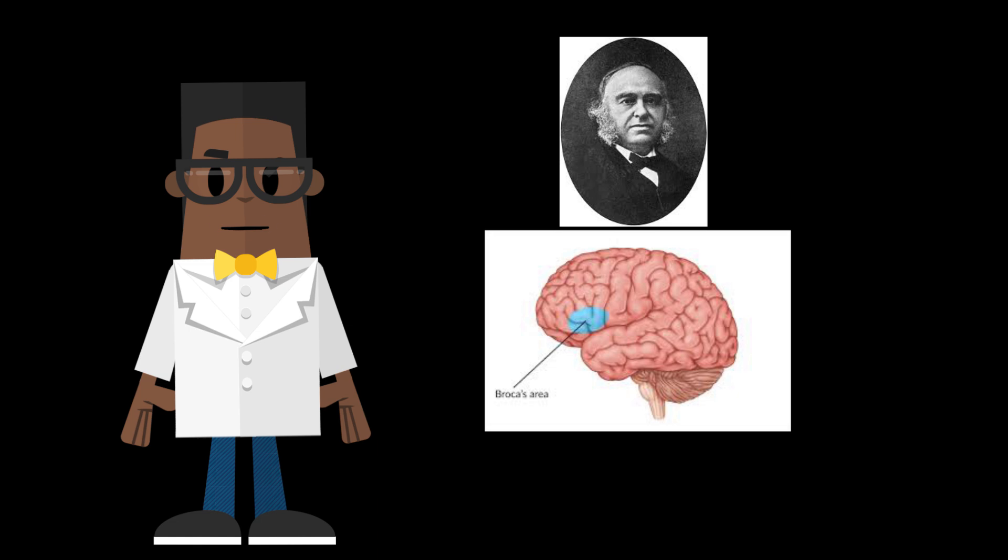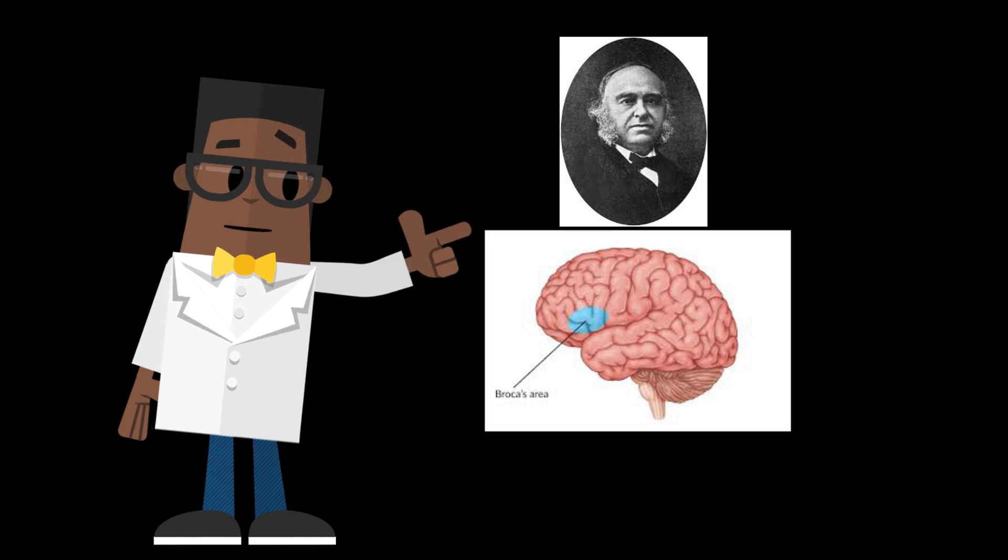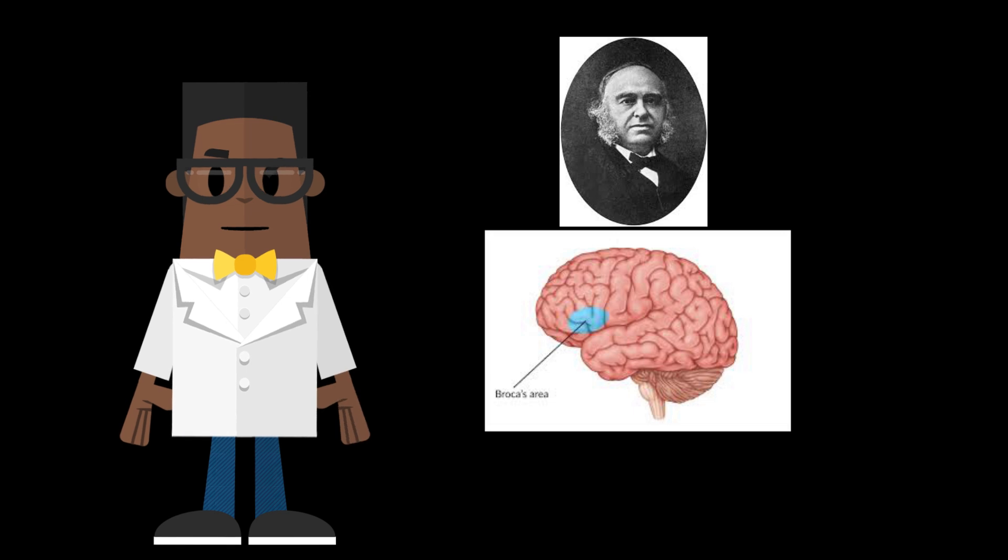One of the first examples discovered of these differential functions was the role of the left hemisphere in language. Physician Paul Broca observed individuals that had damaged an area of the brain in the frontal lobe, later named Broca's area. He noticed that these patients had a deficit in speaking, reading, and writing, though their language comprehension remained unchanged.